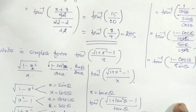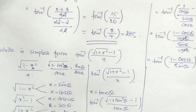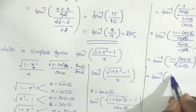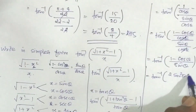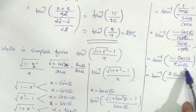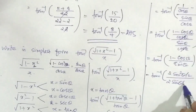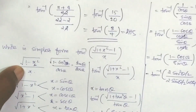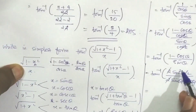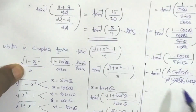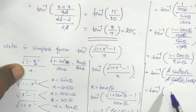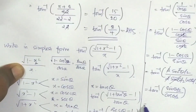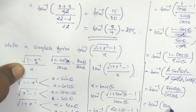We apply the half-angle formula: 1 minus cos theta equals 2 sin squared(theta/2), and sin theta equals 2 sin(theta/2) cos(theta/2). Substituting, we get tan inverse of 2 sin squared(theta/2) divided by 2 sin(theta/2) cos(theta/2). The 2 and sin(theta/2) cancel, leaving tan inverse of sin(theta/2) divided by cos(theta/2), which is tan inverse of tan(theta/2).